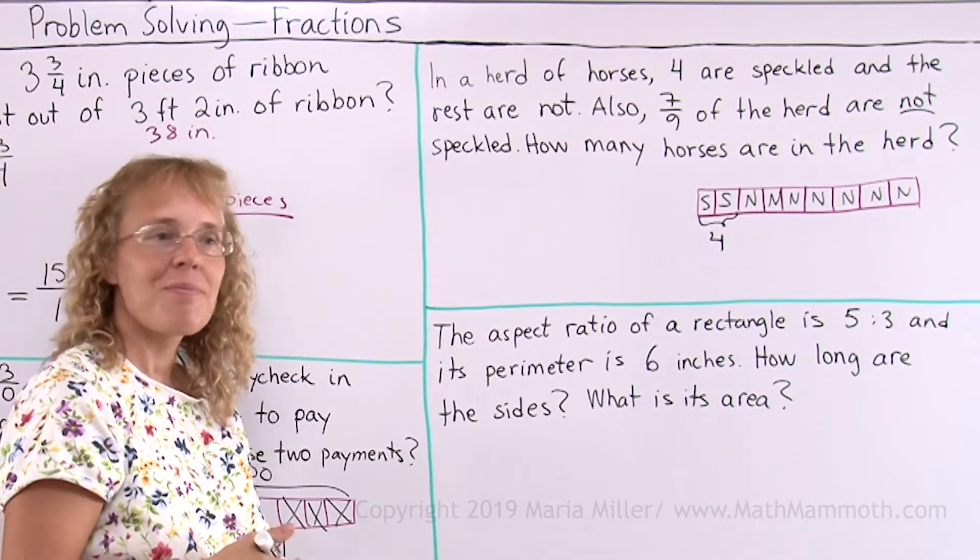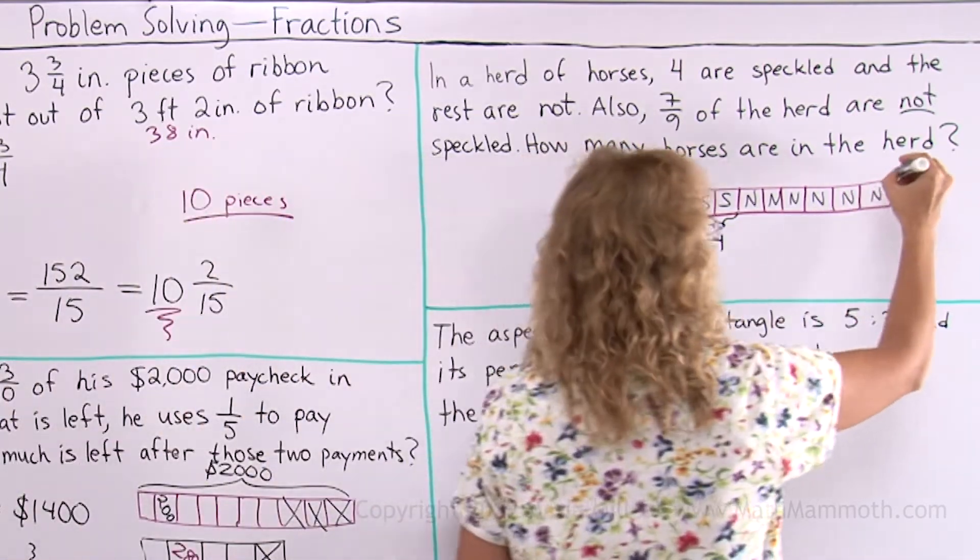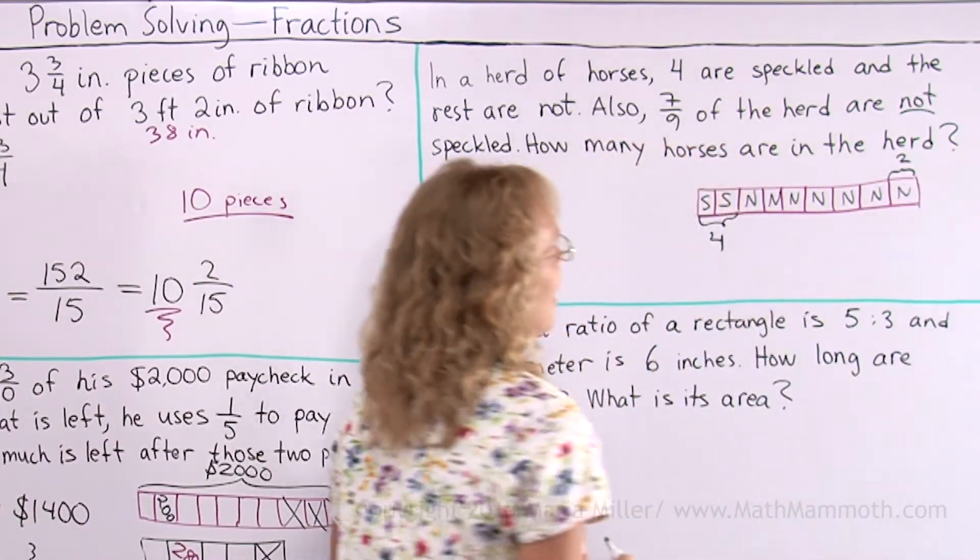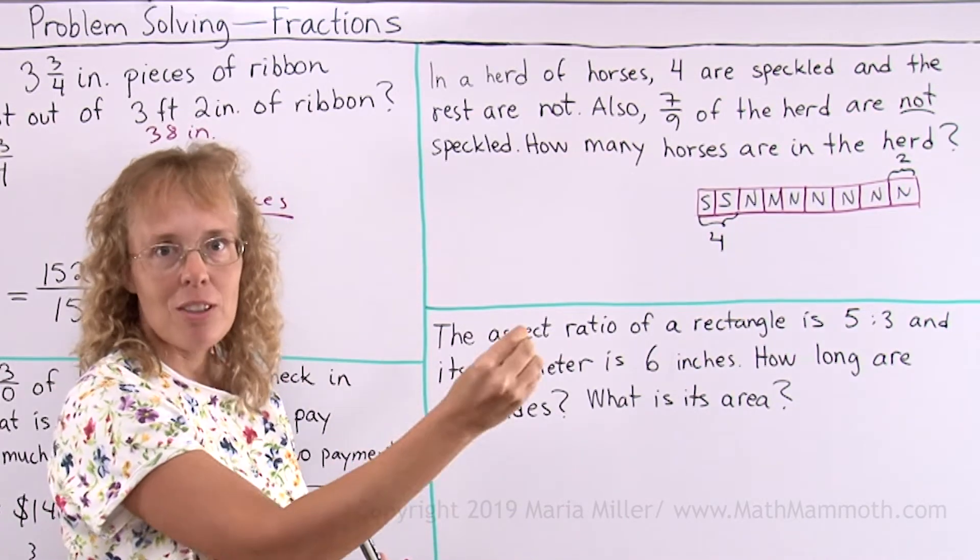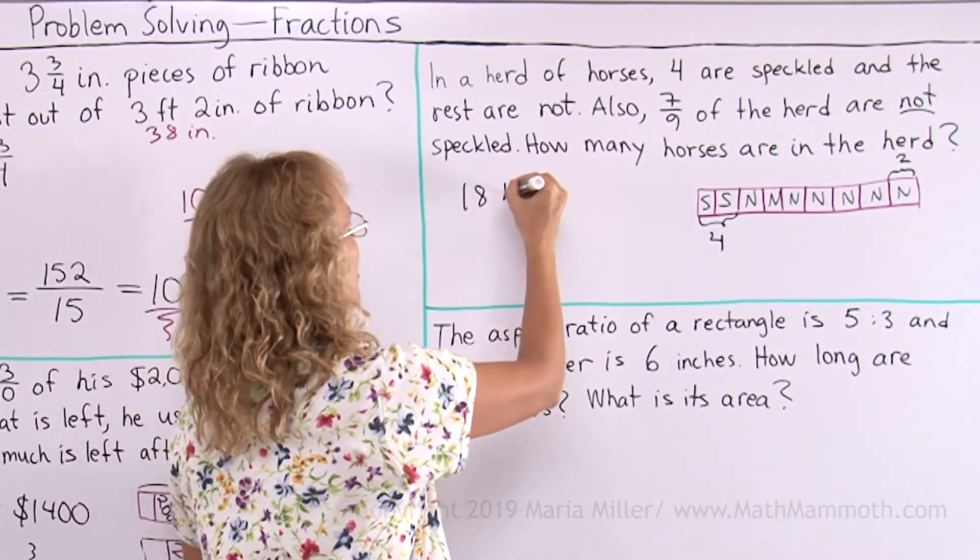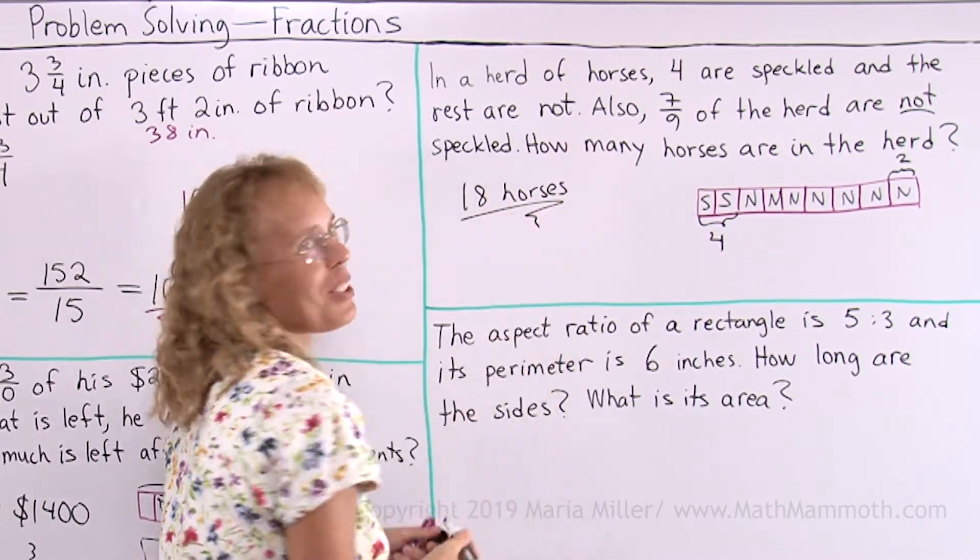So how much is 1 block? 1 block is 2 horses, and I drew 9 blocks. So 9 times 2 is 18. 18 horses. You see, I told you it was simple.